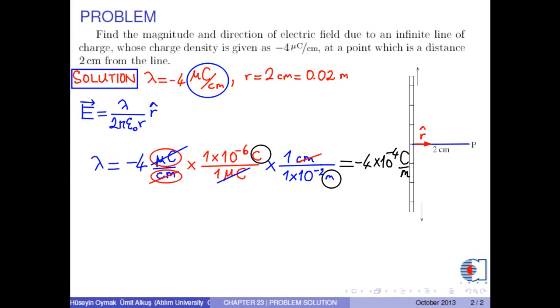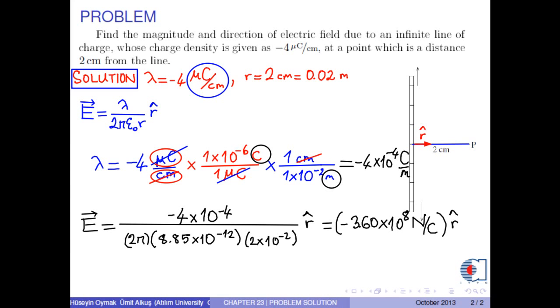Anyway, if we insert all the numerical values into the formula for electric field, we find the magnitude and direction of the electric field due to an infinite line of charge as negative 3.60 times 10 to 8 newtons per coulomb r hat.